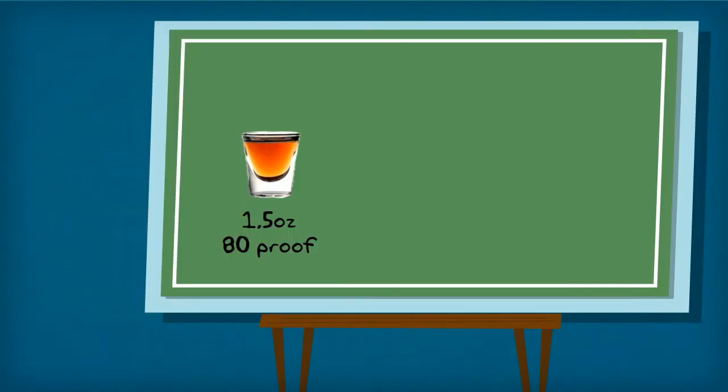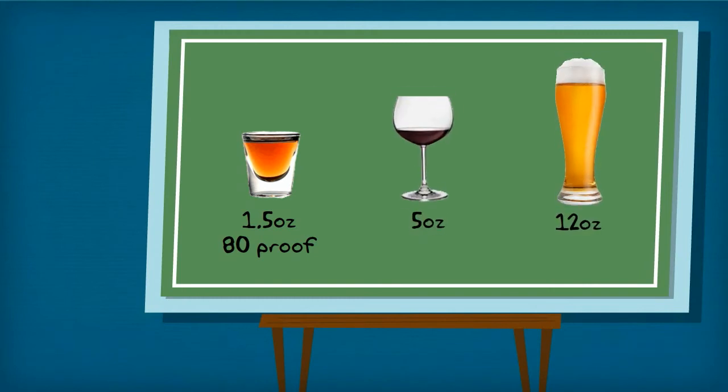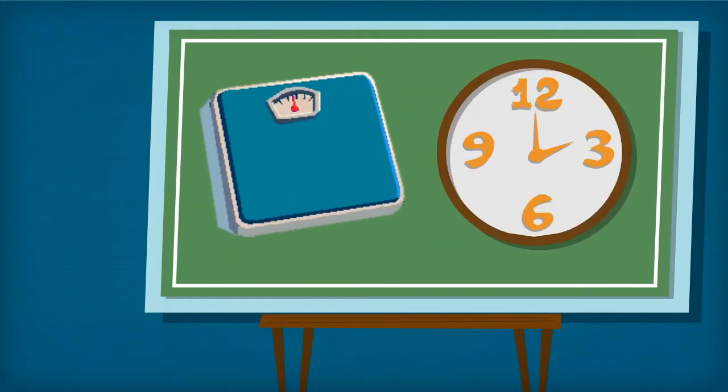Using a BAC chart, they'll just need to know the number of major drinks they plan to drink, their fit weight, and how long they plan to stay out.